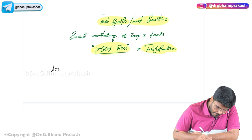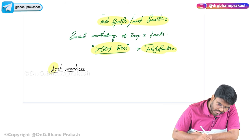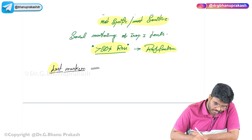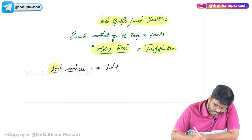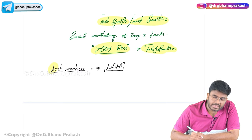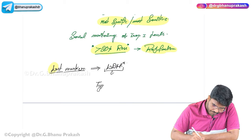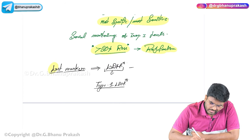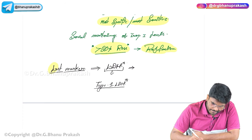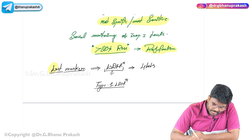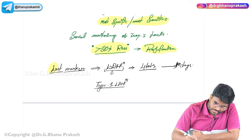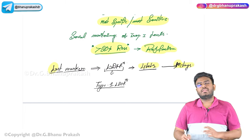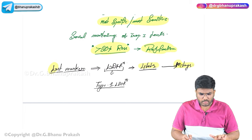The last marker to rise is LDH - lactate dehydrogenase. It is non-specific. The cardiac myocytes especially have type 1 LDH. This LDH rises in 2 to 4 hours and comes back to normal in 10 days. So the earliest to rise is myoglobin and the last to normalize is LDH.